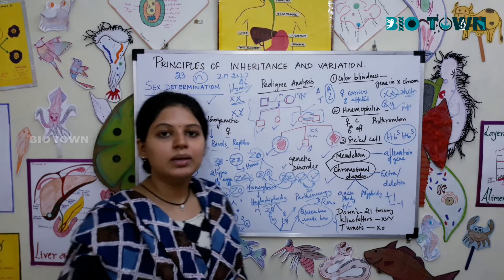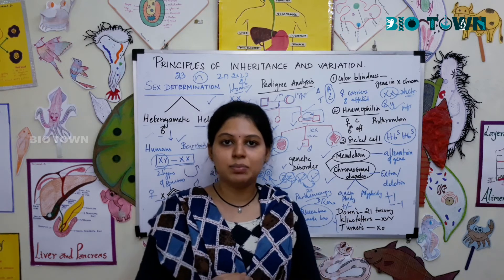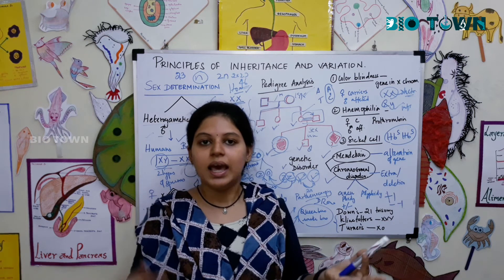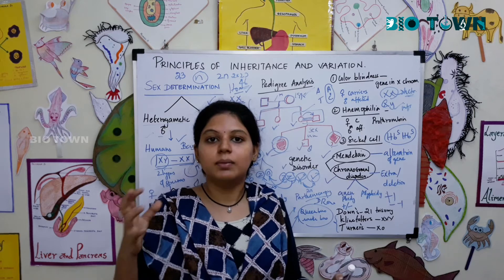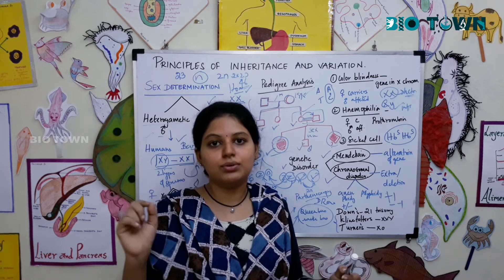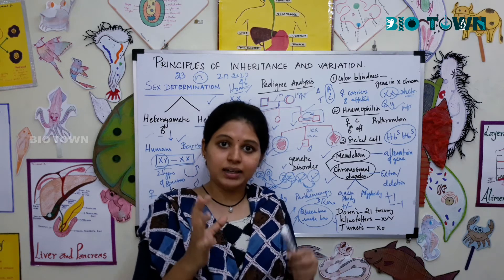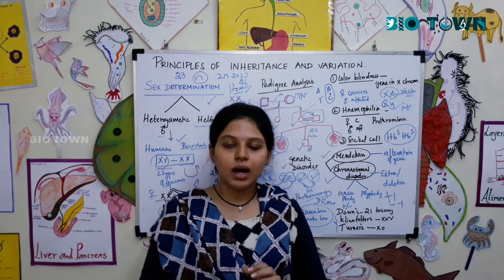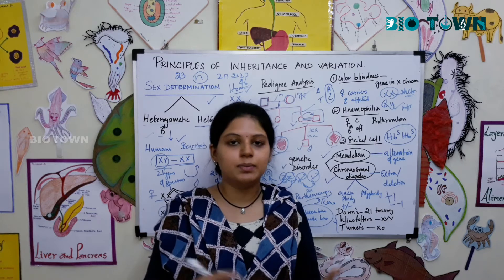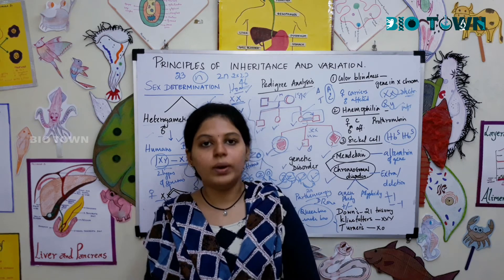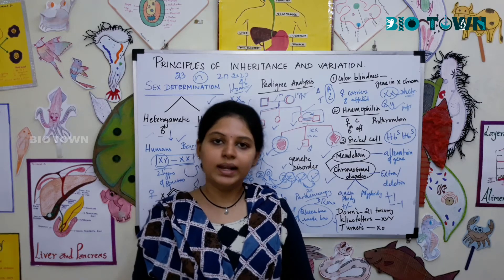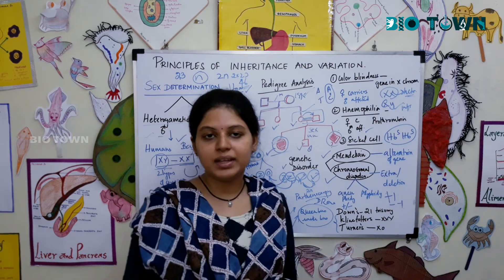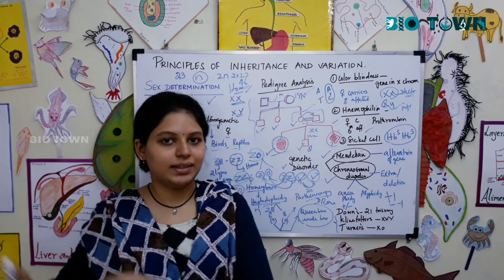Hemophilia is called a 'royal disease' because it was first found in a queen who was bleeding from her knee and the blood did not clot. After an injury, blood must clot — a component called prothrombin is necessary for this. When prothrombin is not secreted, the blood keeps flowing and the individual can die. Like color blindness, hemophilia affects males, and females become carriers for the next generation.